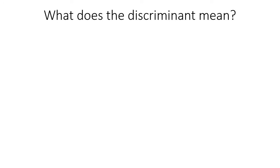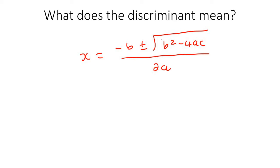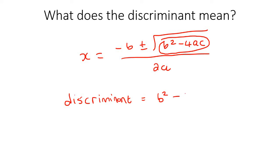In the previous lesson, I showed you how to calculate the discriminant. To calculate the discriminant, you use the quadratic formula, which we've all seen by now. The discriminant is just this part — b squared take away 4ac — not the square root, just that part. Mathematicians like to calculate the discriminant because it tells us very useful information about the type of answers we're going to get, and that's what I'm going to be showing you in this lesson.